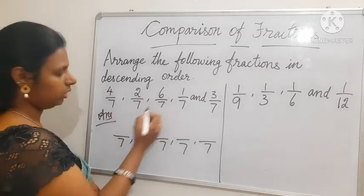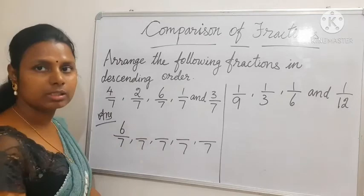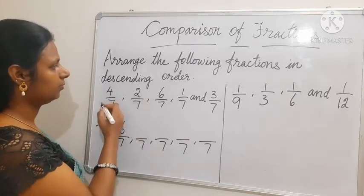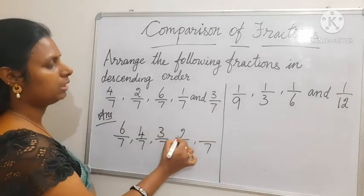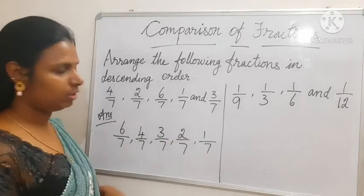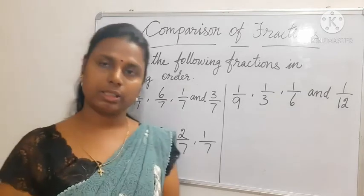6, then 4, then 3, then 2, then 1. So I have written in descending order.